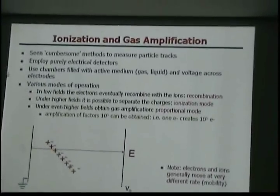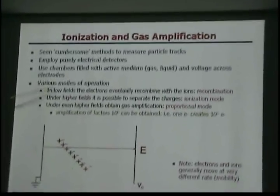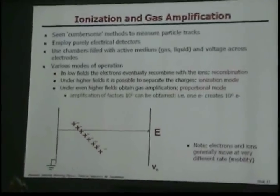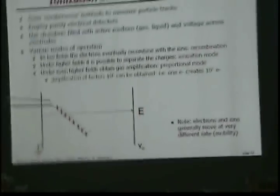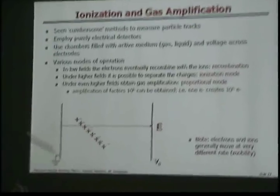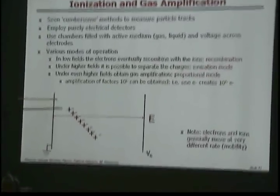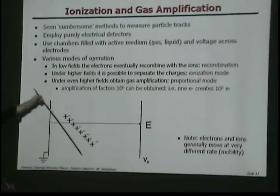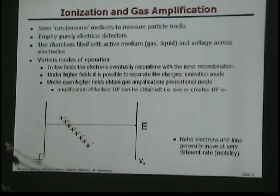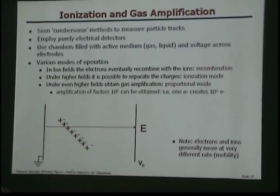So what we do these days is we employ purely electrical detectors. We take a chamber filled with an active medium, normally it's a gas. We put a voltage across the two electrodes, and then if a charged particle goes through it, it ionizes the medium. It creates electrons and positive ions.